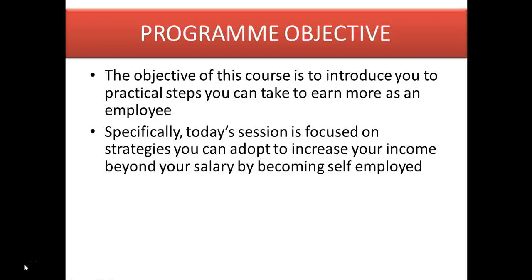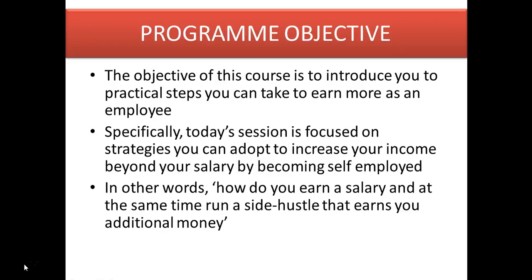We talked last time about four kinds of specialized employees — we had the basic specialized employee. But this class is focused on the employee self-employed. In other words, how do you earn a salary and at the same time run a side hustle that earns you additional money, so that your income at the end of the day is salary plus income from side hustle? How do you run that effectively? A lot of people have tried it and it failed. How exactly do you ensure that it succeeds? We're going to talk about that today.